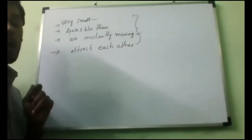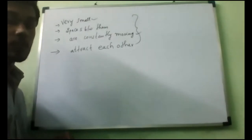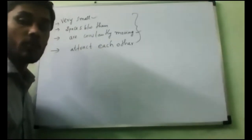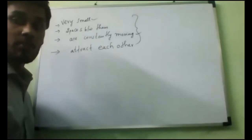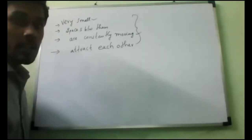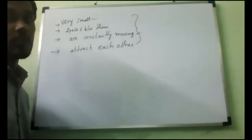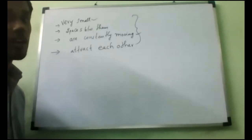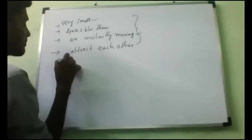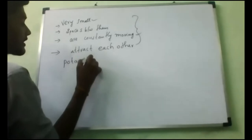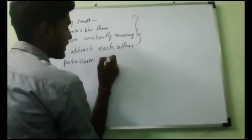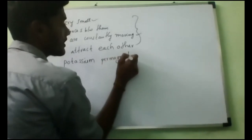Now we will verify how they are small. To prove these four characteristics of matter, we are going to perform some simple experiments. The samples and materials we will be using for these experiments include potassium permanganate.